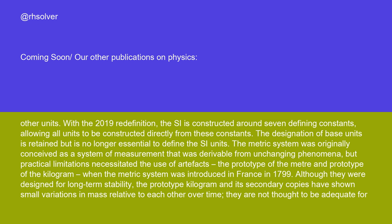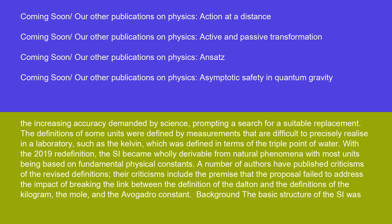The metric system was originally conceived as a system of measurement that was derivable from unchanging phenomena, but practical limitations necessitated the use of artifacts — the prototype of the meter and prototype of the kilogram — when the metric system was introduced in France in 1799. Although they were designed for long-term stability, the prototype kilogram and its secondary copies have shown small variations in mass relative to each other over time, and are not thought to be adequate for the increasing accuracy demanded by science, prompting a search for a suitable replacement.